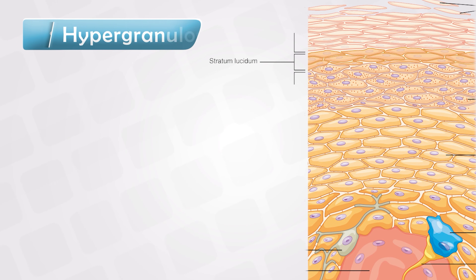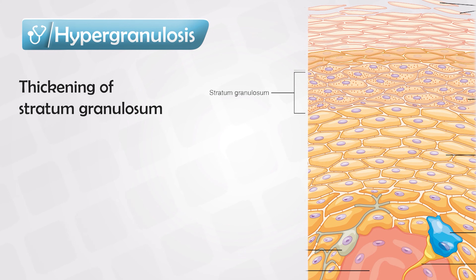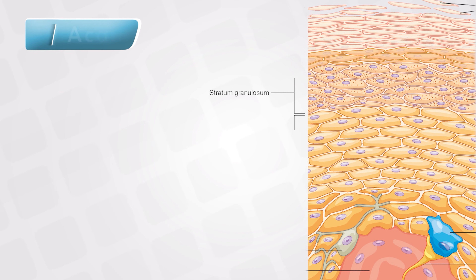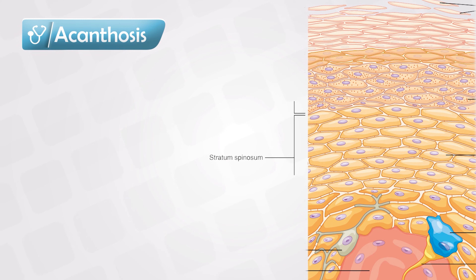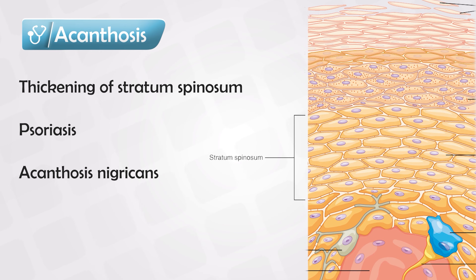If there is an increase in the thickness or number of layers in the stratum granulosum area, we call this hypergranulosis — we see this in lichen planus. If there is an increase in the spinosum area, we call this acanthosis — we see this in psoriasis and also in acanthosis nigricans.